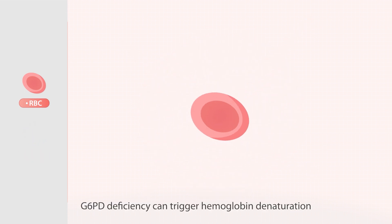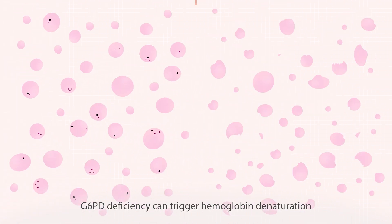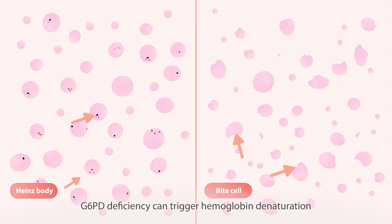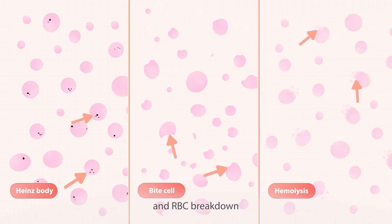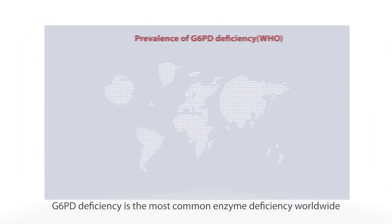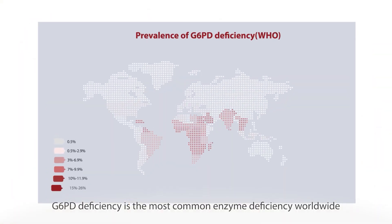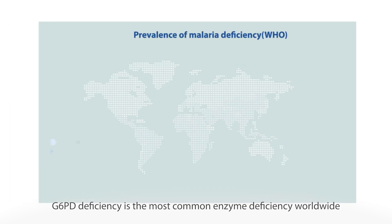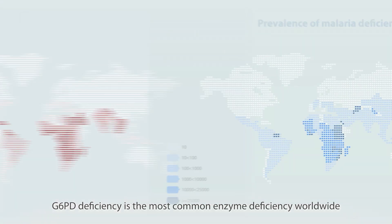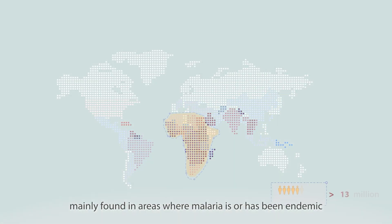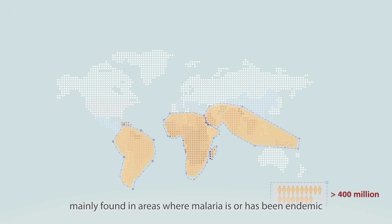G6PD deficiency can trigger hemoglobin denaturation and RBC breakdown. It is the most common enzyme deficiency worldwide, mainly found in areas where malaria is or has been endemic.